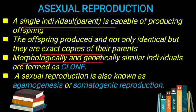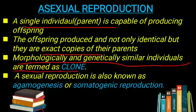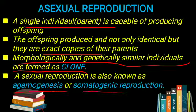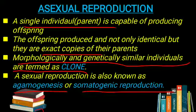Morphologically and genetically similar individuals are termed as clones. Asexual reproduction produces clones as offspring. Asexual reproduction is also known as Agamogenesis or Somatogenic Reproduction. It is called Somatogenic Reproduction because it involves mitosis division — an equational division that maintains the same chromosome number as the parents.